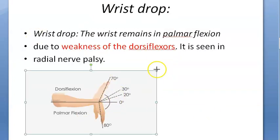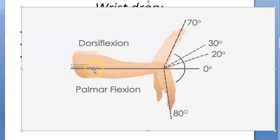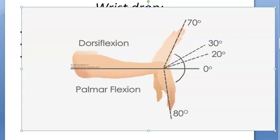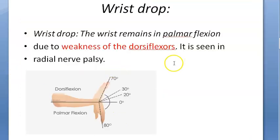Wrist drop will happen. Wrist drop means dorsiflexion is not working — only palmar flexion is working — so the hand has fallen down. Everything here we are showing with the right hand.